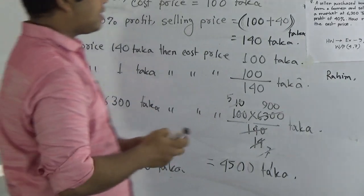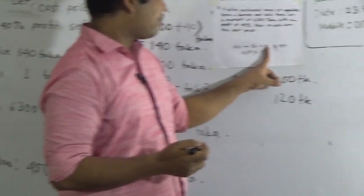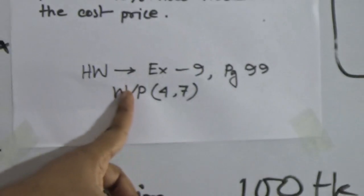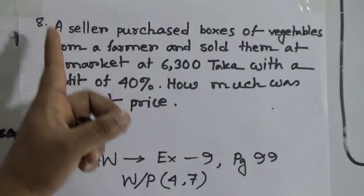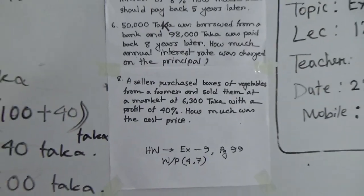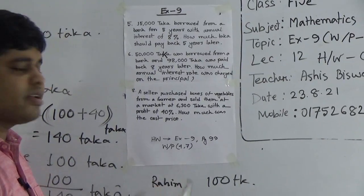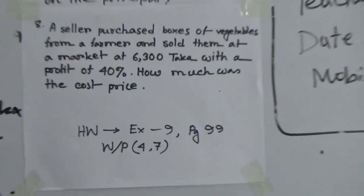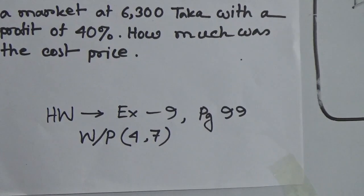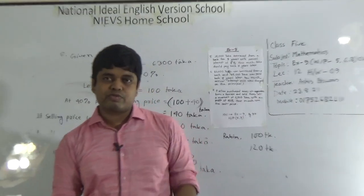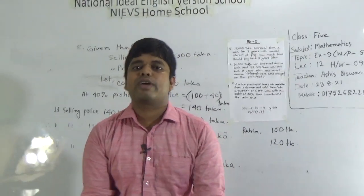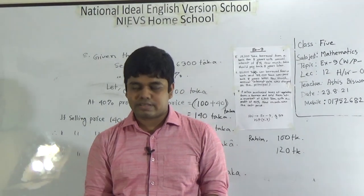From exercise 9, page number 99, problem number 4 and 7 will be your SW. If you can understand problems 5, 6, and 8, then you can easily solve question number 4 and 7. If you face any type of problem, you must make a phone call to me — my phone number is given on the board. I hope this class is fruitful for you. Keep practicing at home. Assalamualaikum.